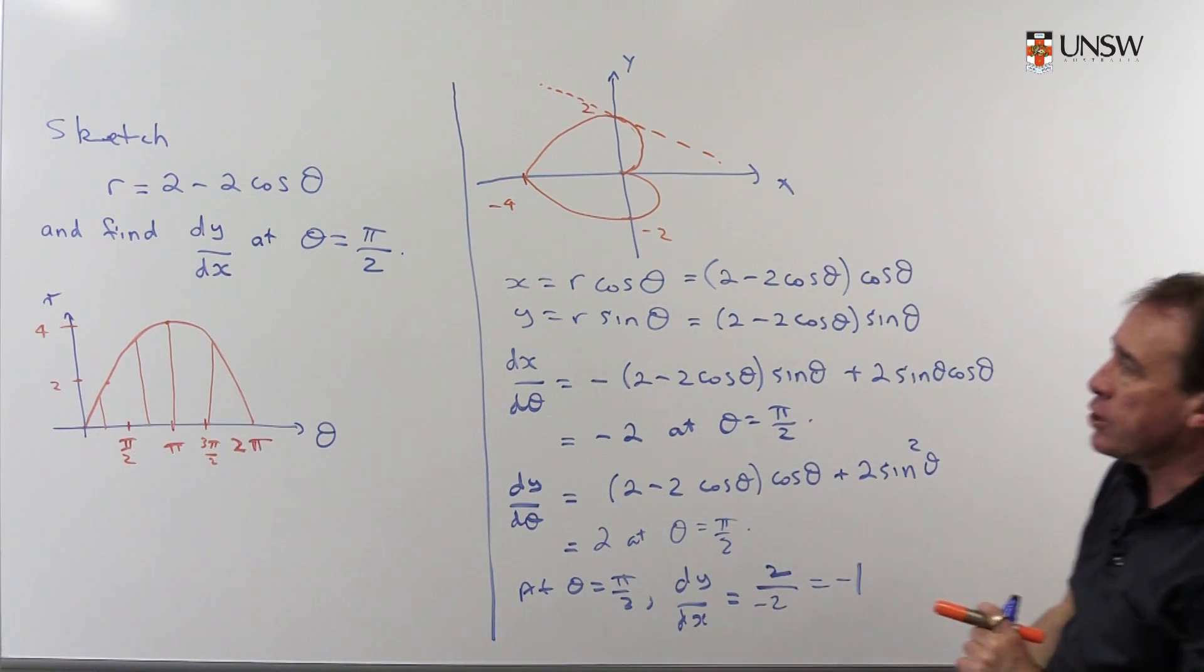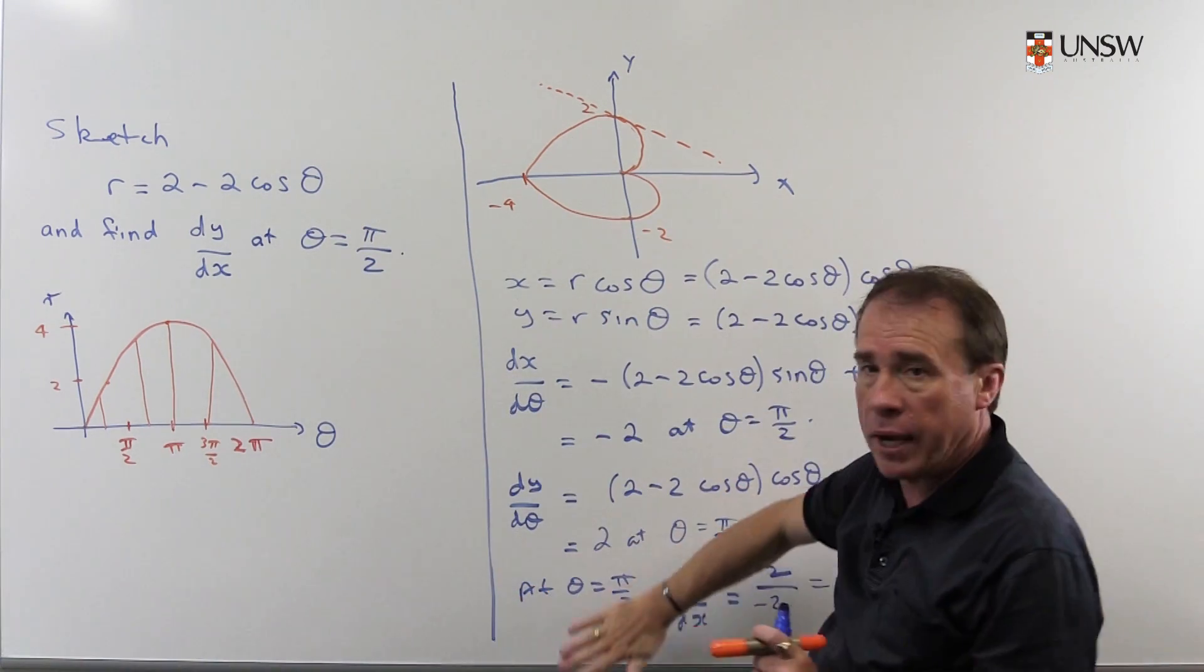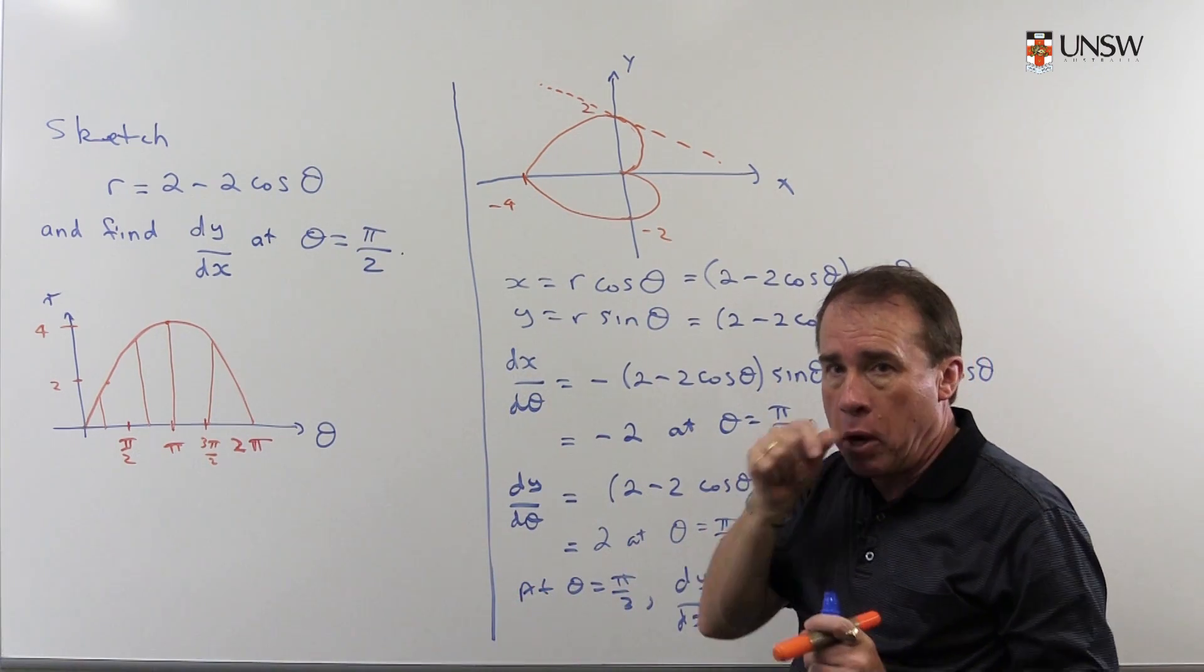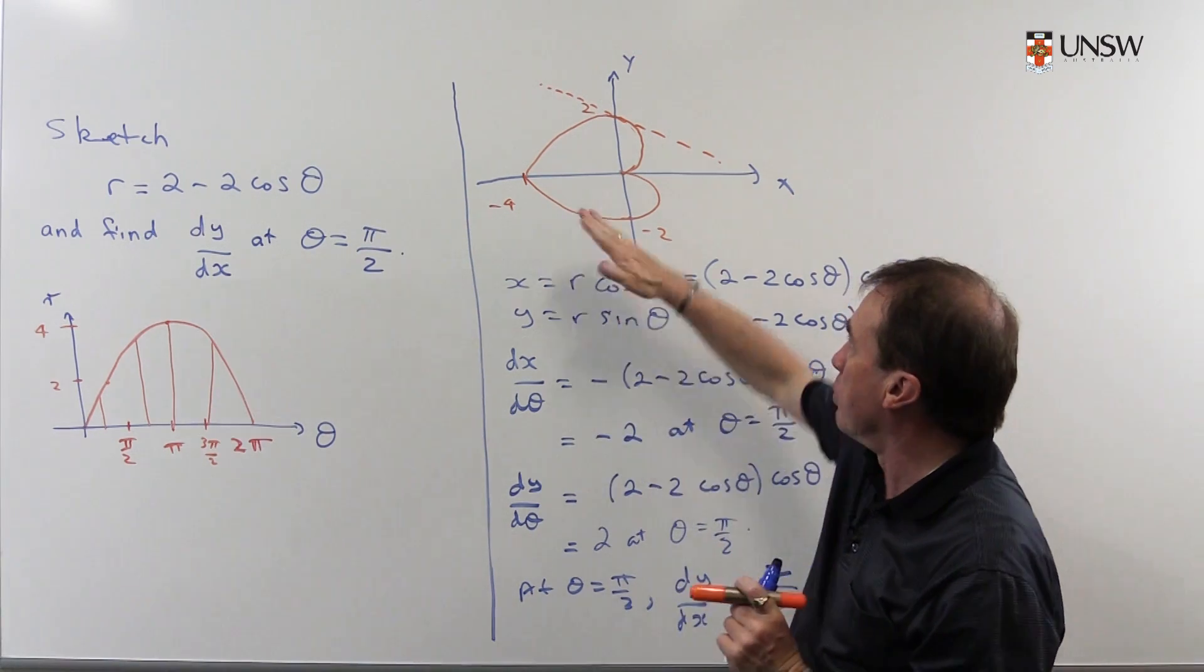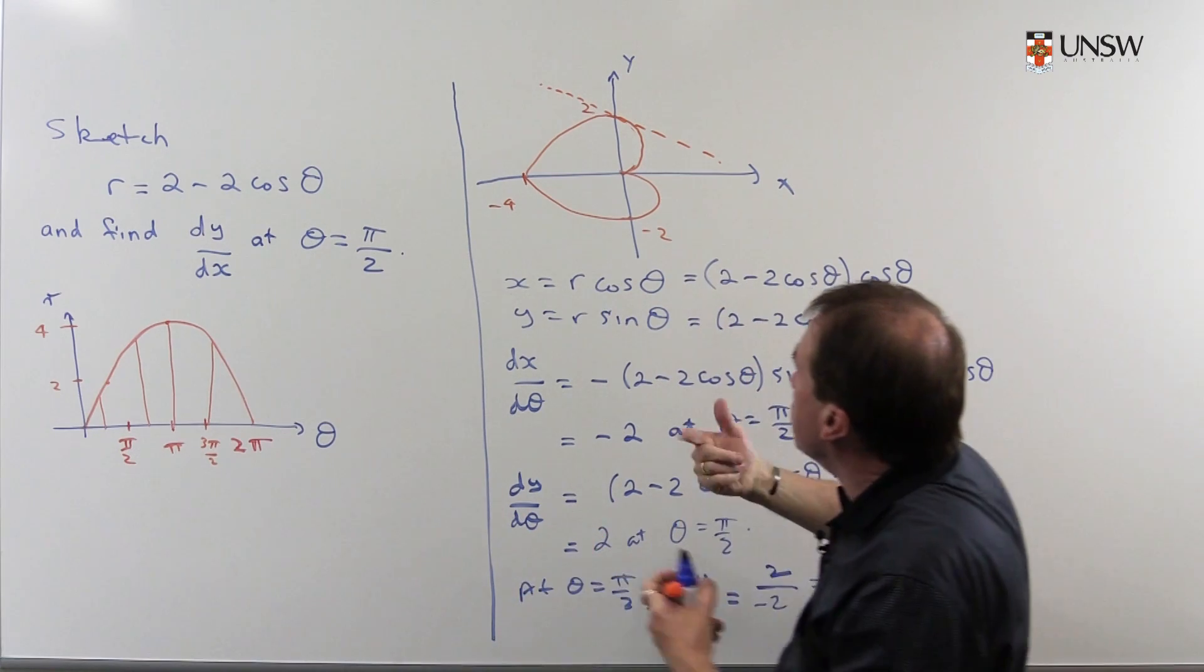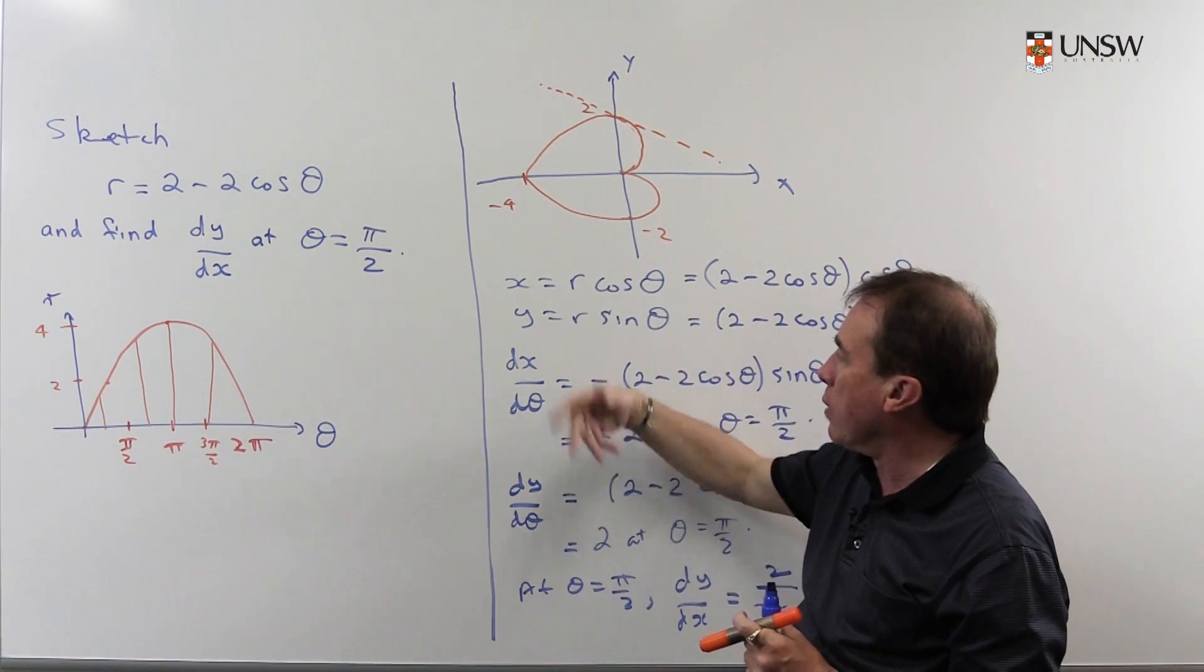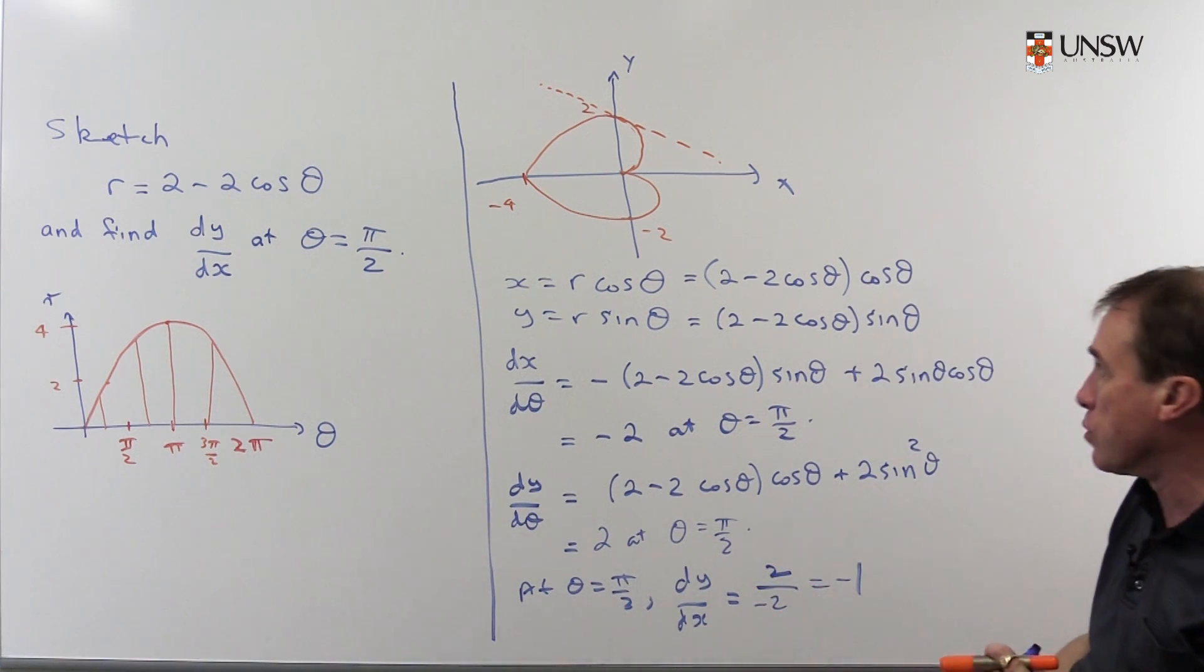If you're just asked to sketch a curve, then you don't need to do all this harder analysis unless you really want to know in detail what's happening. You simply stop at that point and draw the sketch. But sometimes if you want to see exactly what's happening at various points on the curve, then you can analyze that further by calculating the derivative.